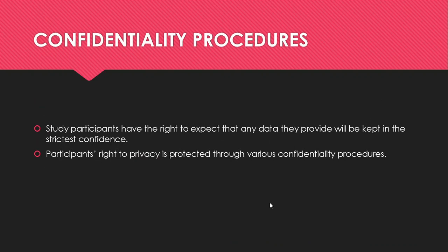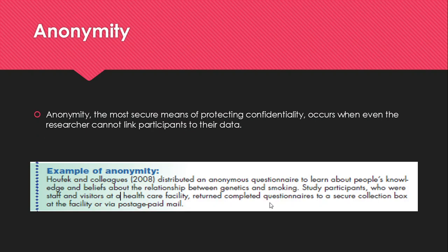Confidentiality procedures ensure that participants have the right to expect that any data they provide will be kept in strictest confidence. Participants' right to privacy is protected through various confidentiality procedures. Anonymity is the most secure means of protecting confidentiality, and occurs when even researchers cannot link participants to their data. For example, if questionnaires were distributed to a group of nursing home residents and returned without any identifying information, responses would be anonymous. Similarly, if a researcher reviewed hospital records from which all identifying information — such as name, address, and social security number — has been expunged, anonymity would protect participants' right to privacy.